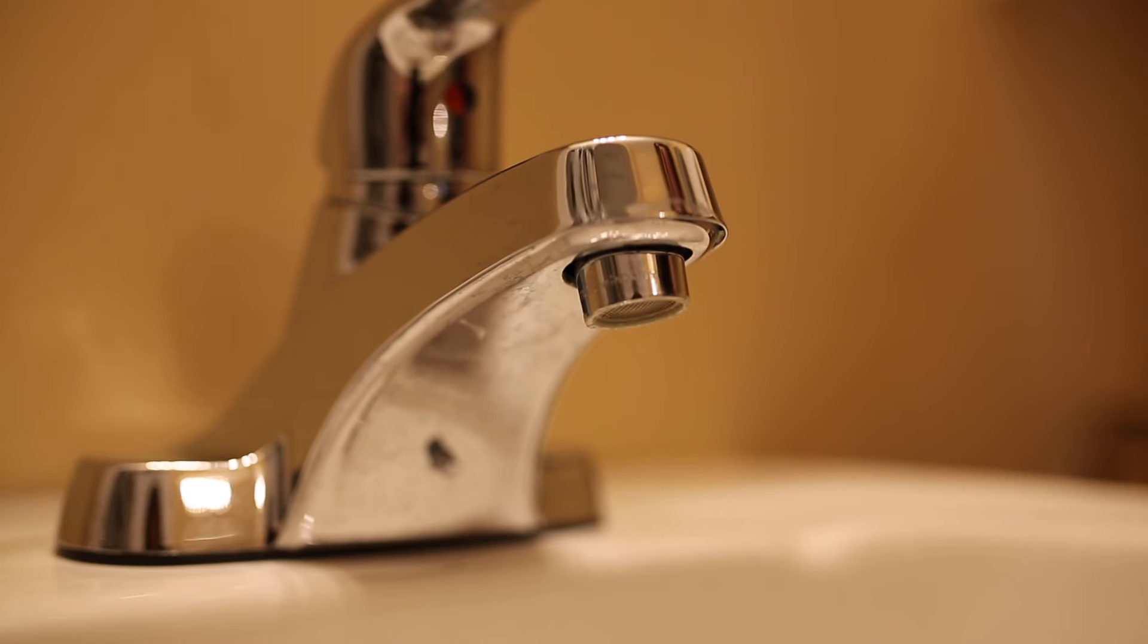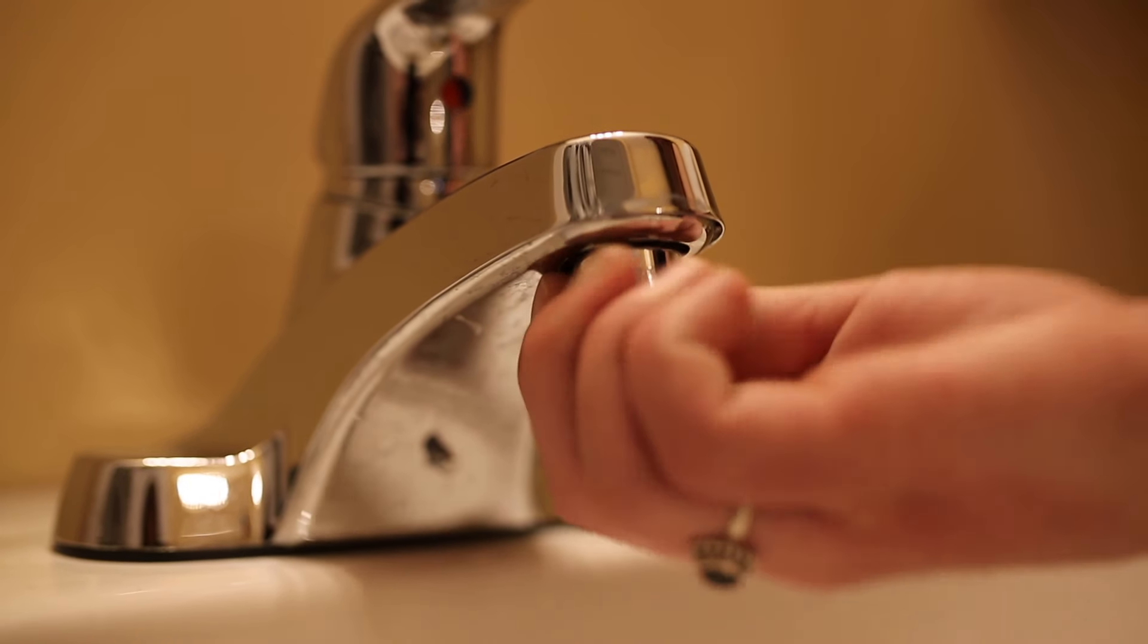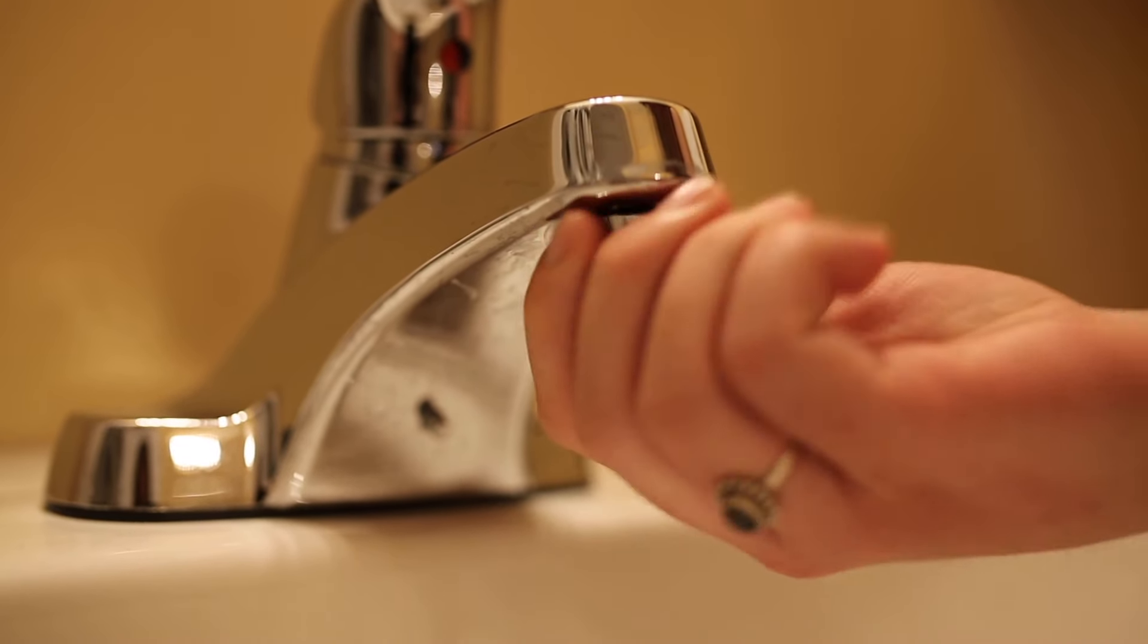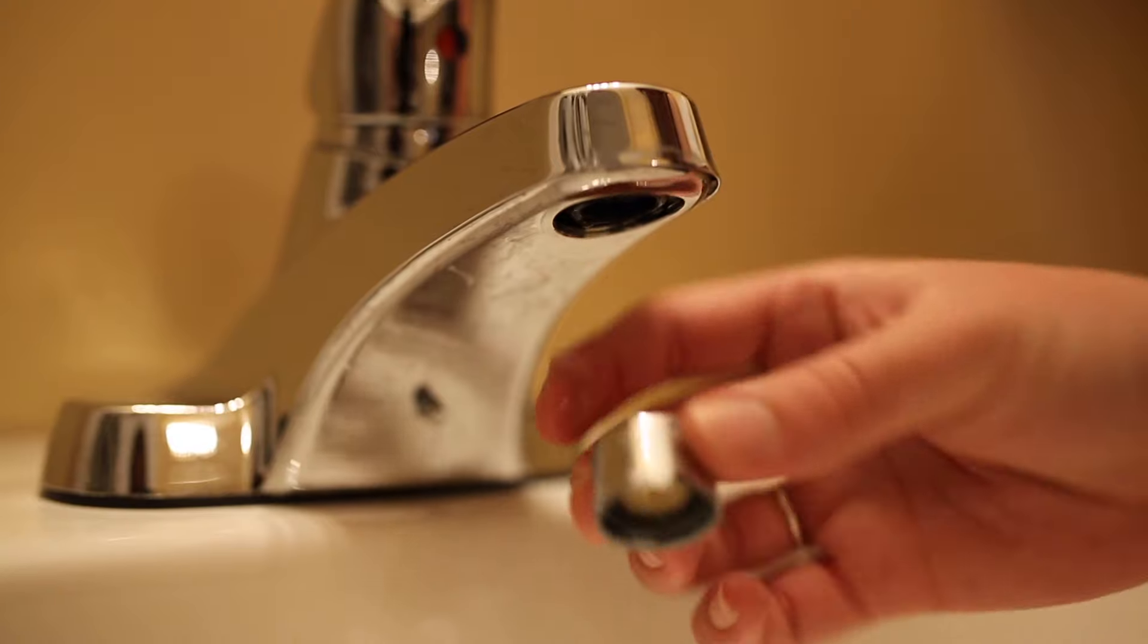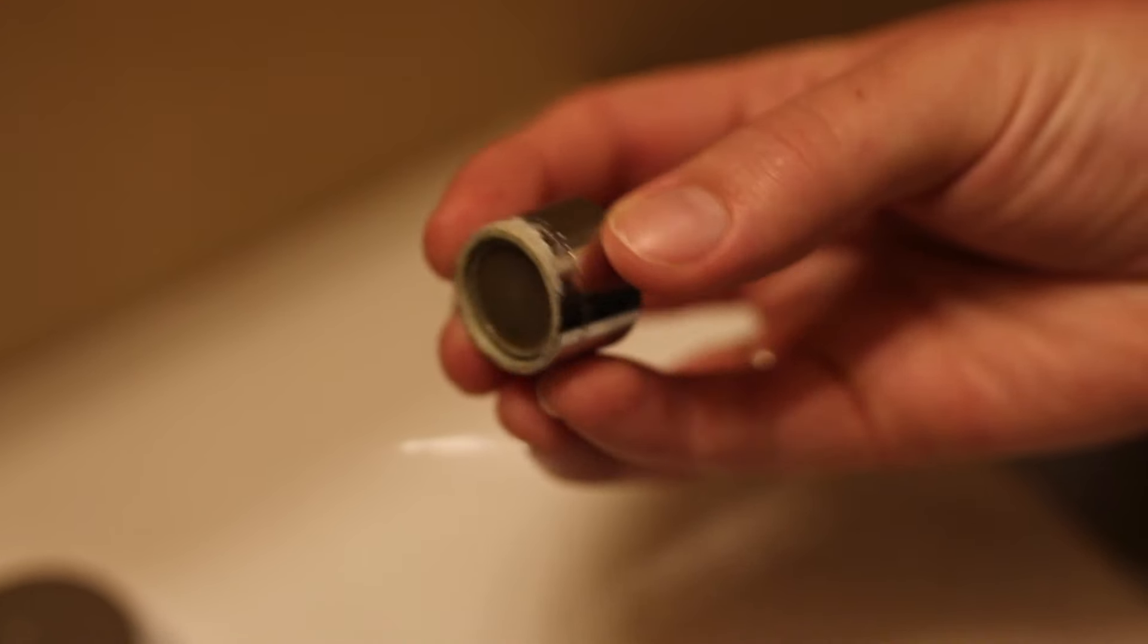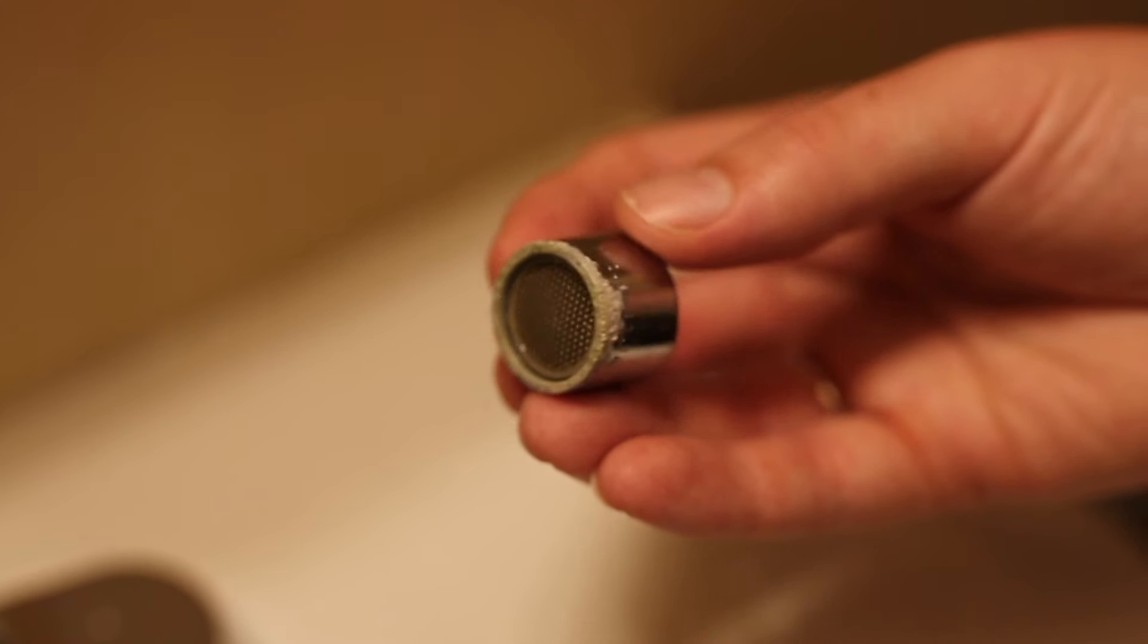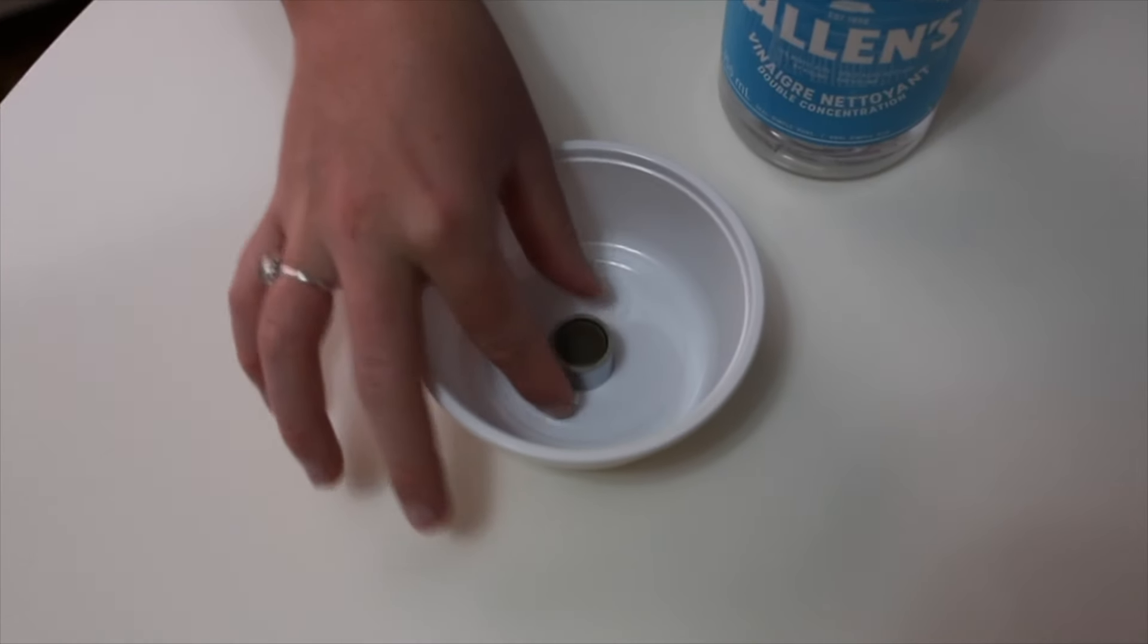Today we're going to teach you how to clean your sink faucet aerator. They get super coated in hard water, but it's really easy to clean them. Start by removing the aerator simply by twisting it off. Fill a small bowl of straight vinegar.